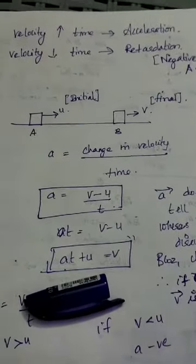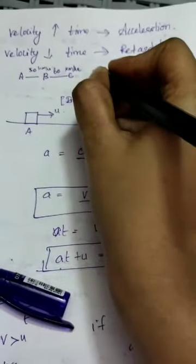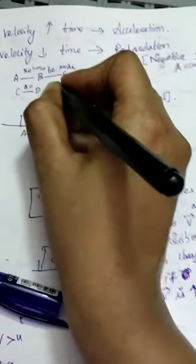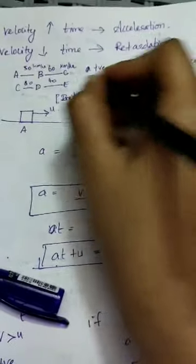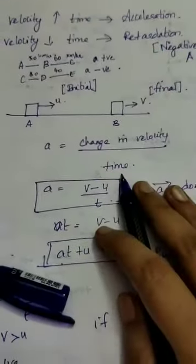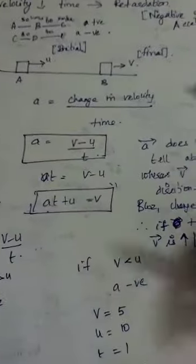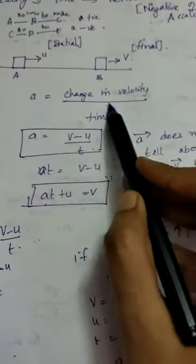When velocity decreases with time, it is called retardation or negative acceleration. From A to B I travel at 50 km/h; from B to C I increase to 60 km/h — the car is accelerating, that is positive acceleration. From C to D at 60 km/h, then from D to E I reduce to 40 km/h — acceleration is taking place but the value is negative, so that is retardation.